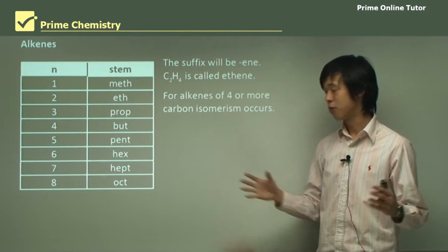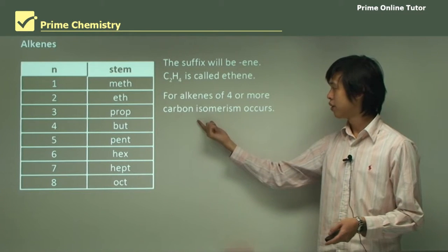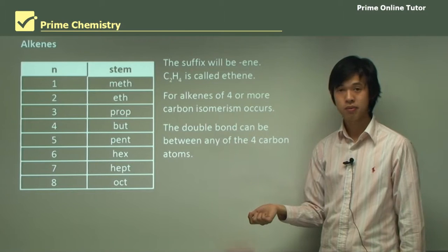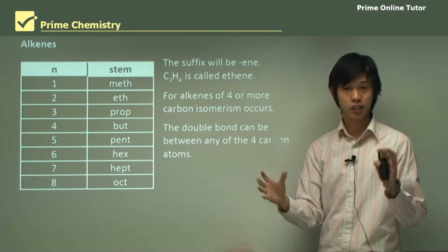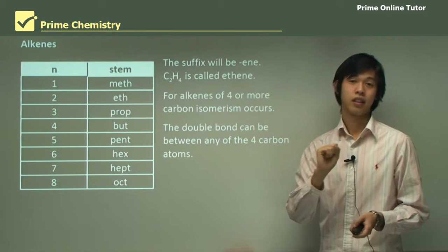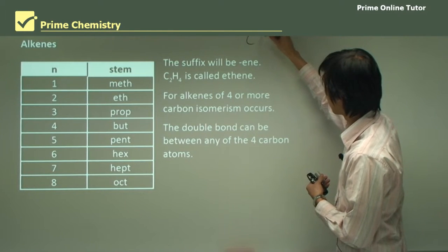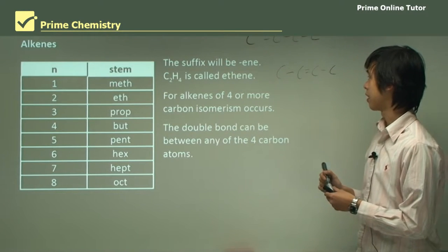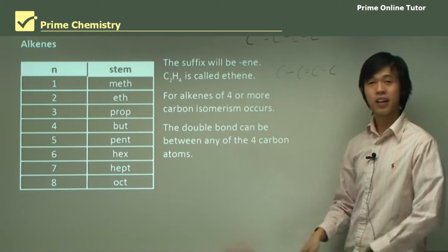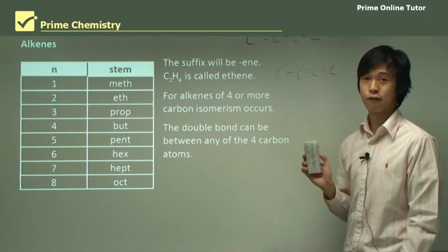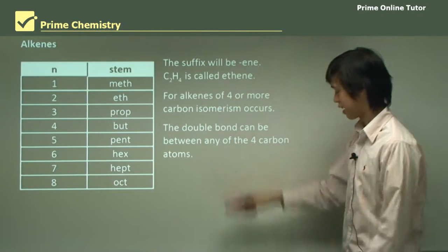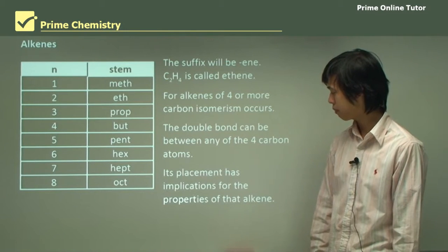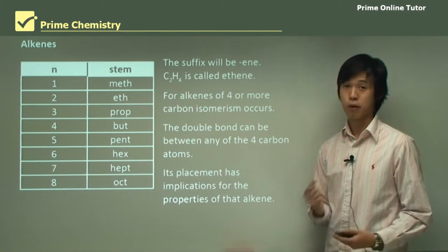For alkenes of four or more carbons, from butene upwards, we have what's called positional isomerism. Because the double bond can be between any of the carbon atoms, while we have the same chemical composition, the double bond being in different places means we have different chemicals. So one structure is chemically different from another even if just the double bond position moves. That's what we mean by isomerism — the same chemical composition but different chemical structures, giving different chemical properties. The placement of the double bond has implications for the properties of the alkene.